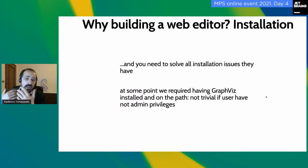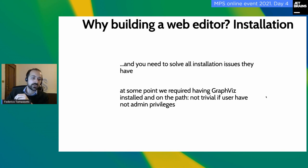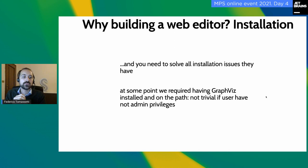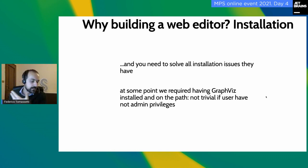Also, as developers, we tend to forget that our users sometimes don't have admin privileges on their machines. For example, at some point we needed to install Graphviz and ensure it was on the PATH, but normally users don't have permission to do that. So you need to call someone from IT. It's not exactly great — it's an effort we'd like to avoid.